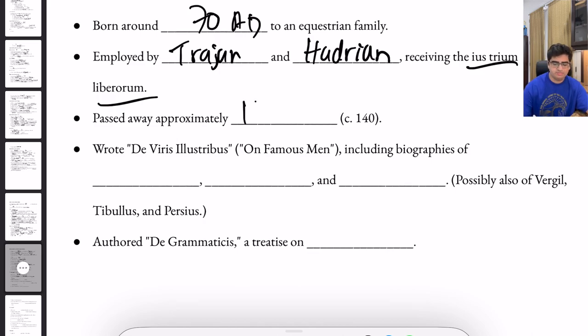He passed approximately in 140 A.D. He wrote De Viris Illustribus, which translates to On Famous Men, including biographies of Horace, Lucan, and Terence, possibly also of Virgil, Tibullus, and Persius.